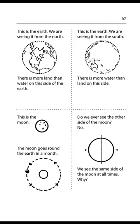Page 67. This is the earth. We are seeing it from the north. There is more land than water on this side of the earth. This is the earth seen from the south. There is more water than land on this side. This is the moon. The moon goes round the earth in a month. Do we ever see the other side of the moon? No. We see the same side of the moon at all times. Why?